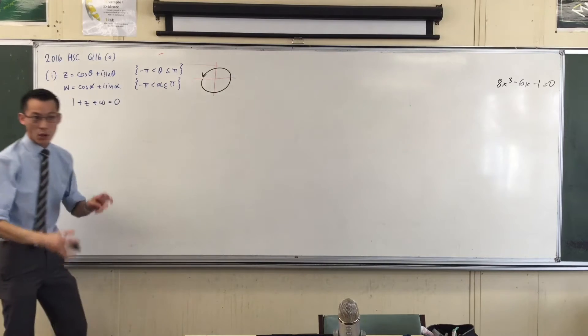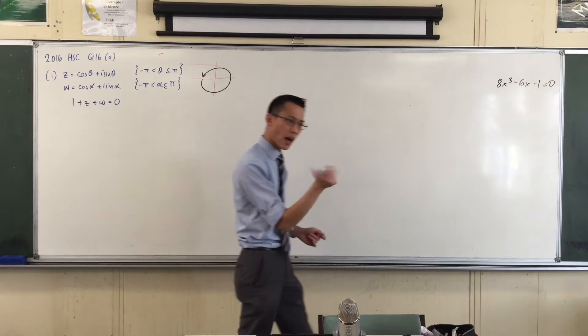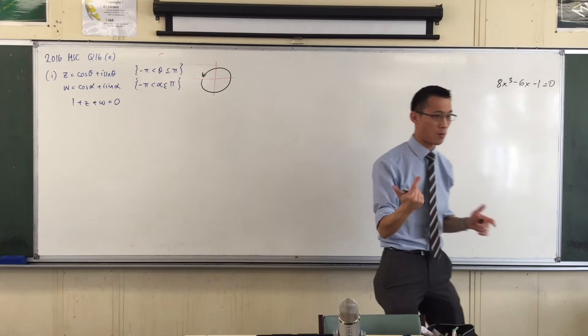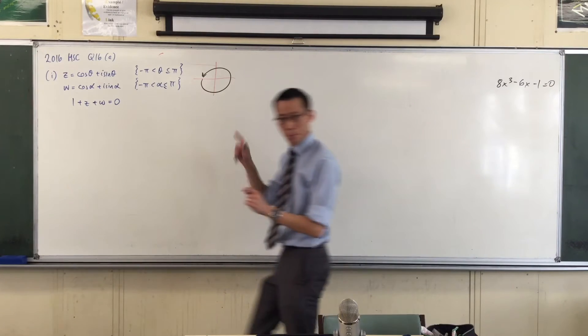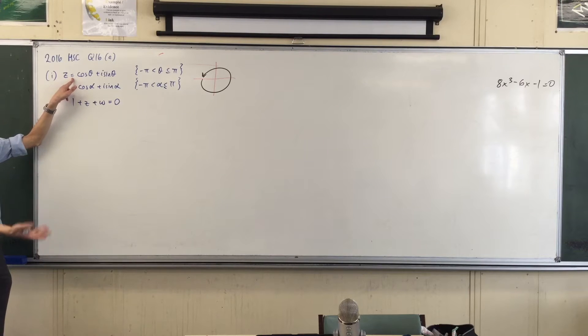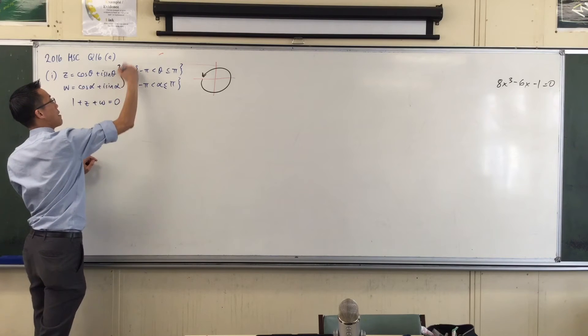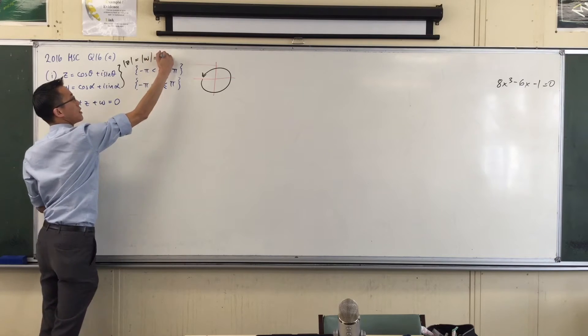What's the other piece of information you need for a complex number to know where it is? It's the modulus. That actually tells you a little more about the modulus, doesn't it? Both of these numbers—the modulus would be R at the front, wouldn't it? But there's nothing written, which means R equals one. That's important. We might put both of these down: mod Z and mod W, they're both one. That will become important later on.